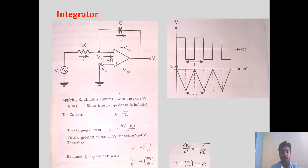Here also V1 is 0 because of the virtual ground concept — V2 is grounded, that is why we can treat V1 as 0. If we substitute V1 as 0, it becomes minus C · dV0/dT.